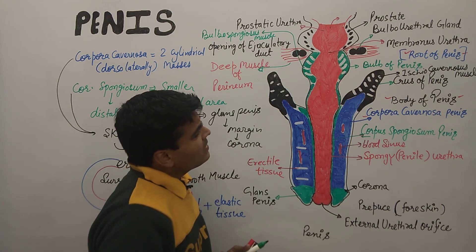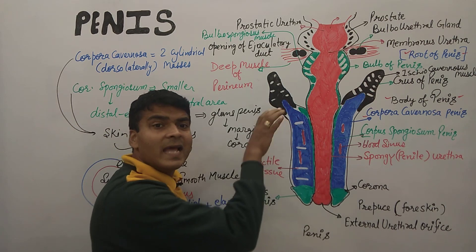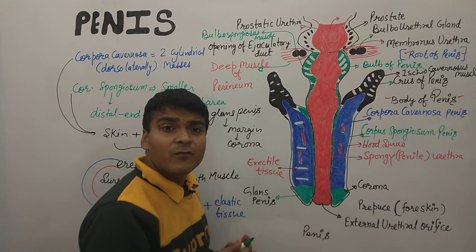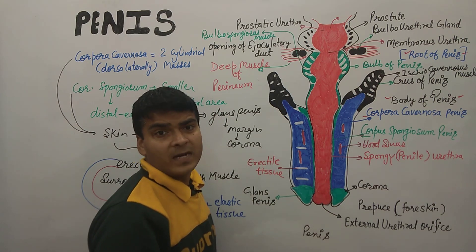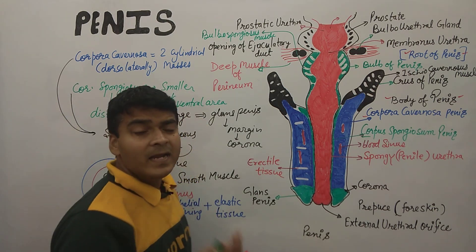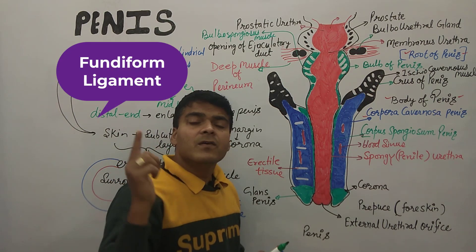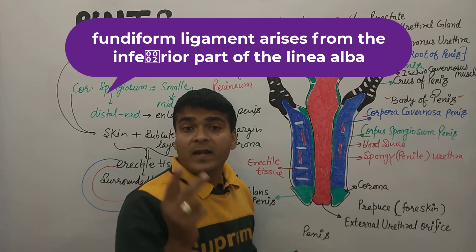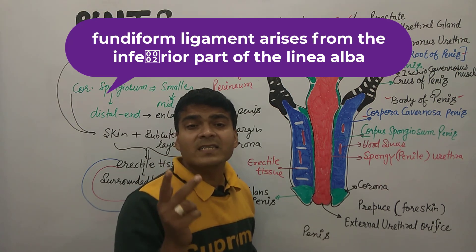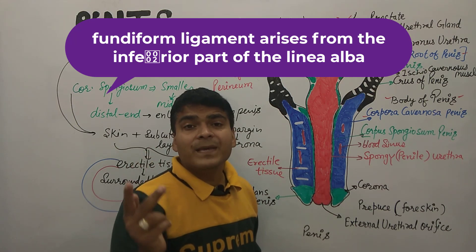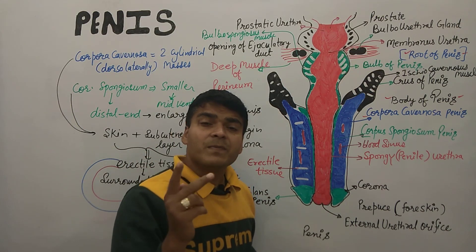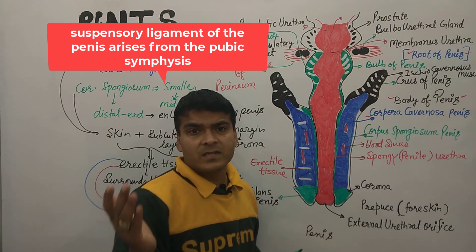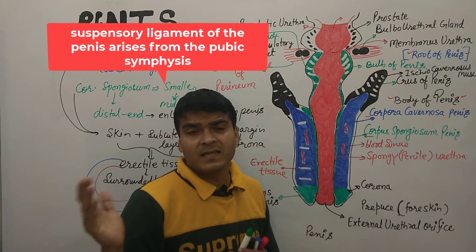The penis is a hanging structure suspended from the body. The weight of the penis is supported by two ligaments. The first ligament is the fundiform ligament, which originates from the linea alba. The second ligament is the suspensory ligament, which originates from the pubic symphysis.